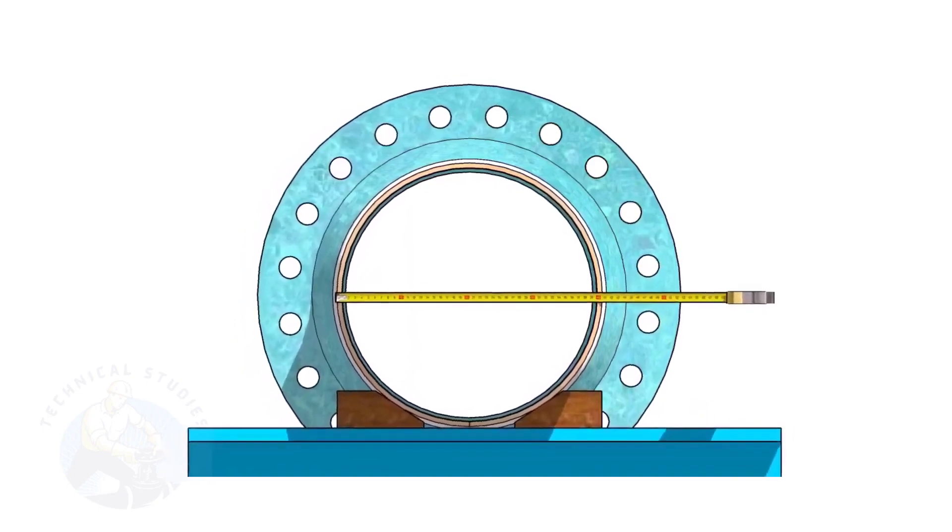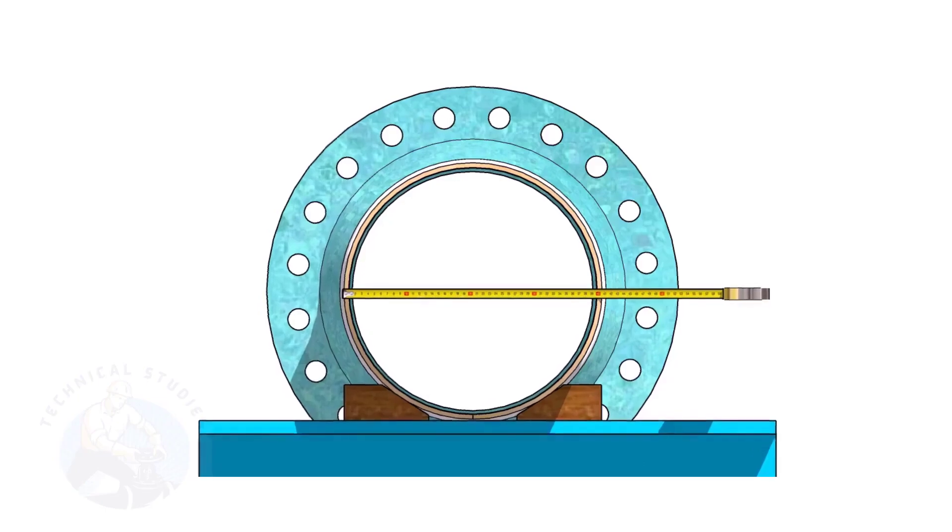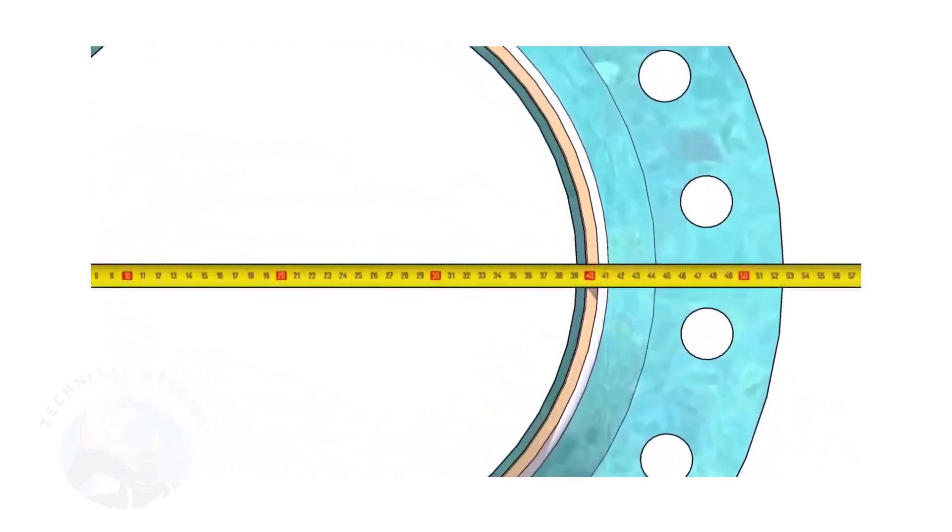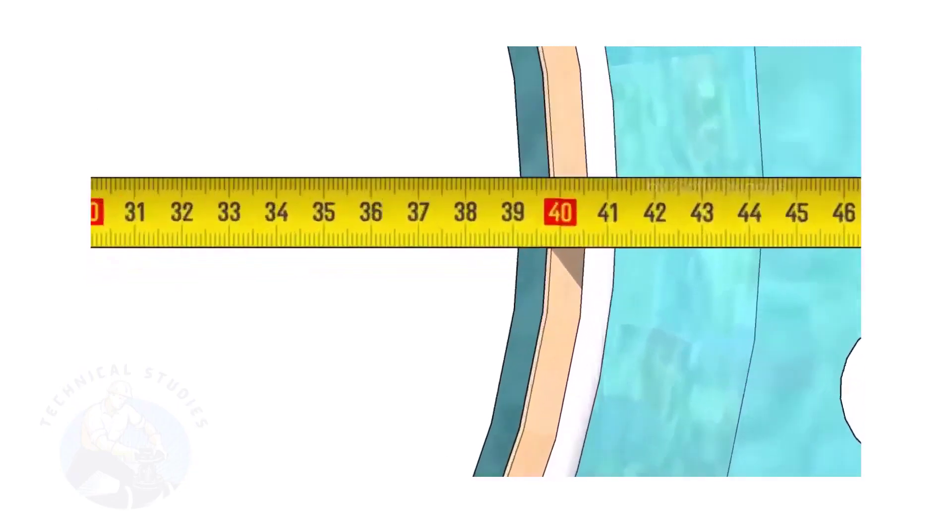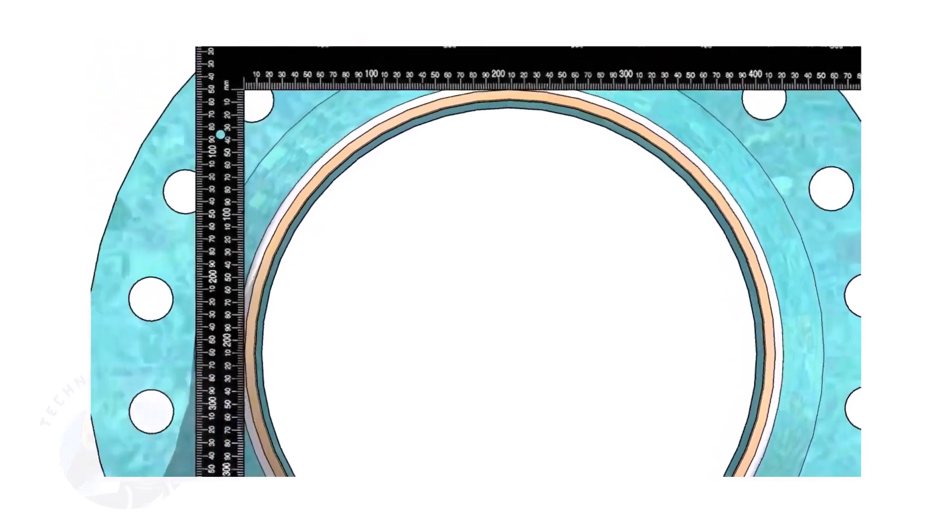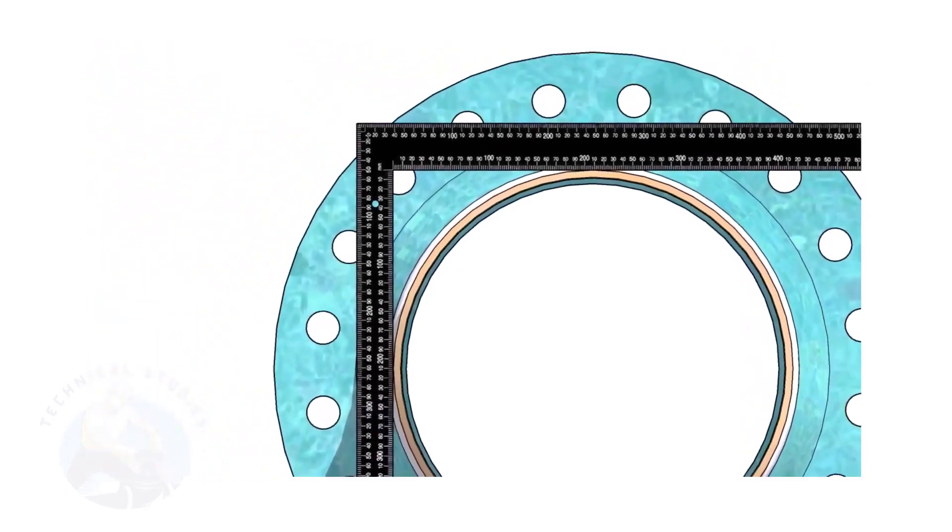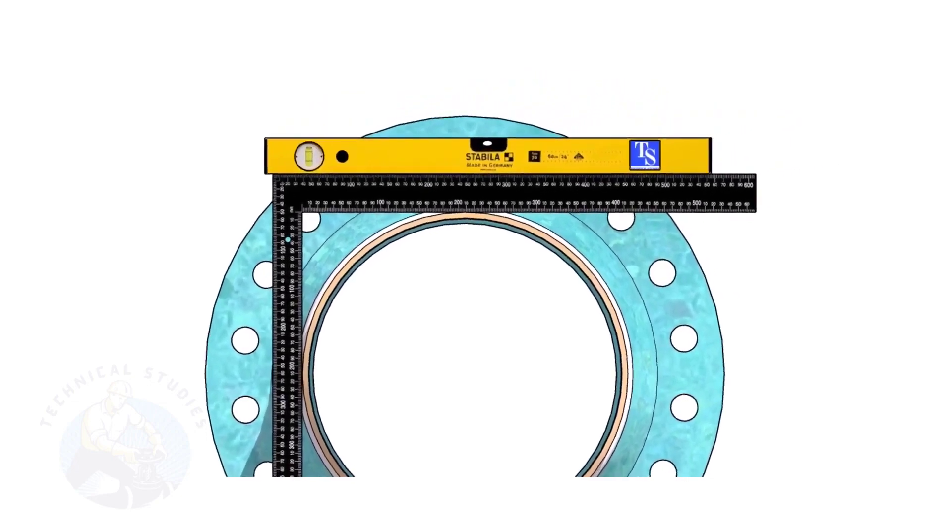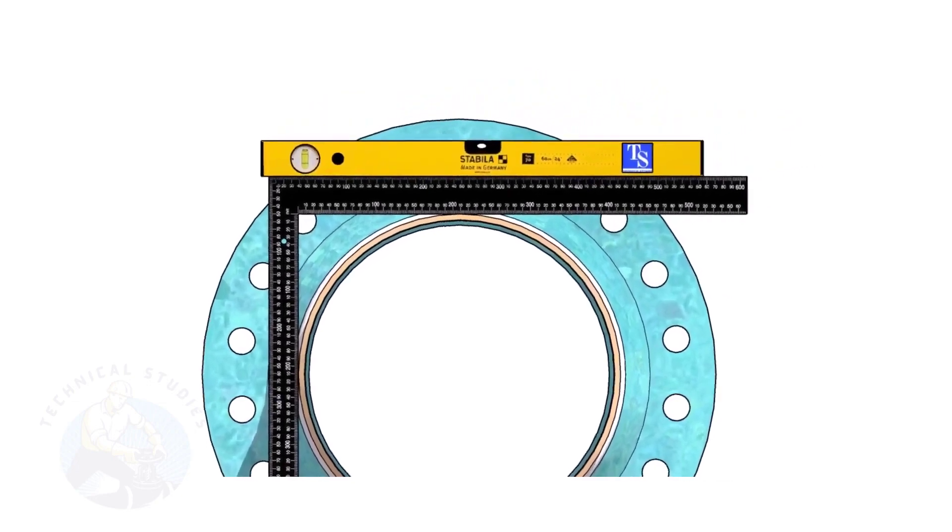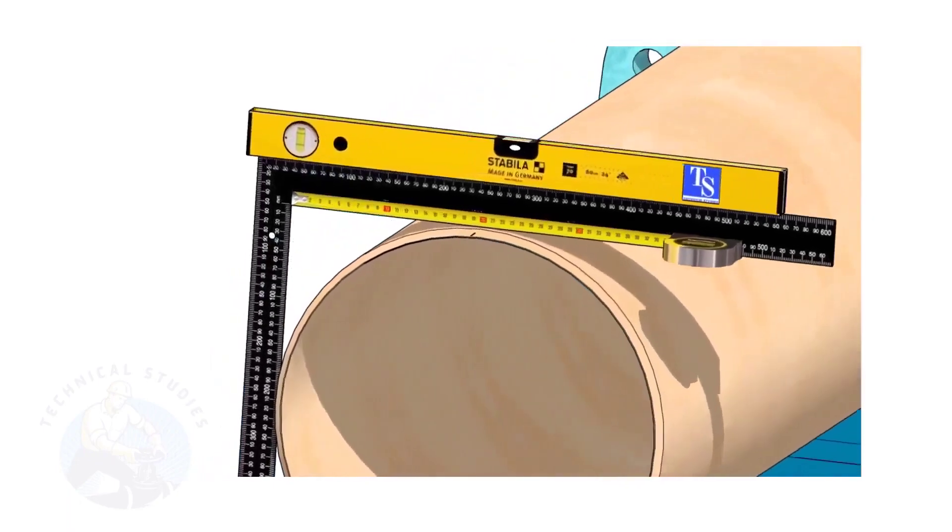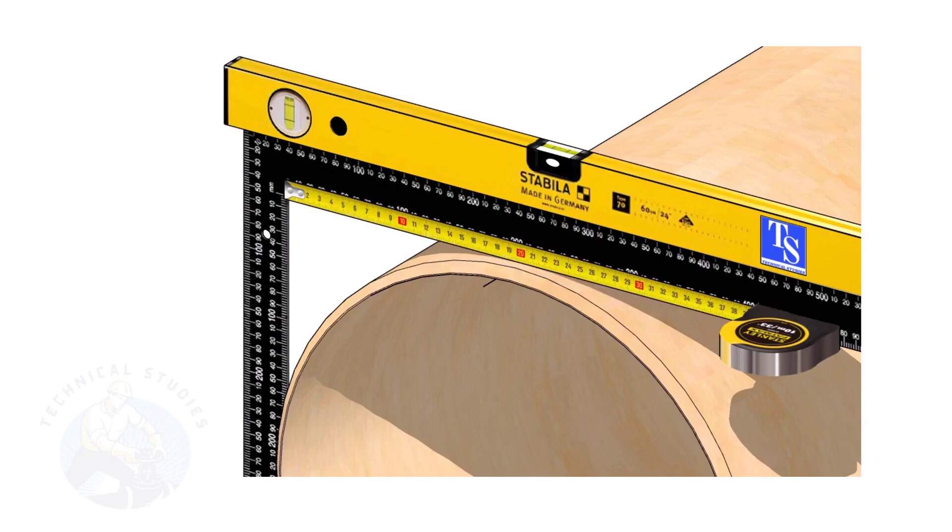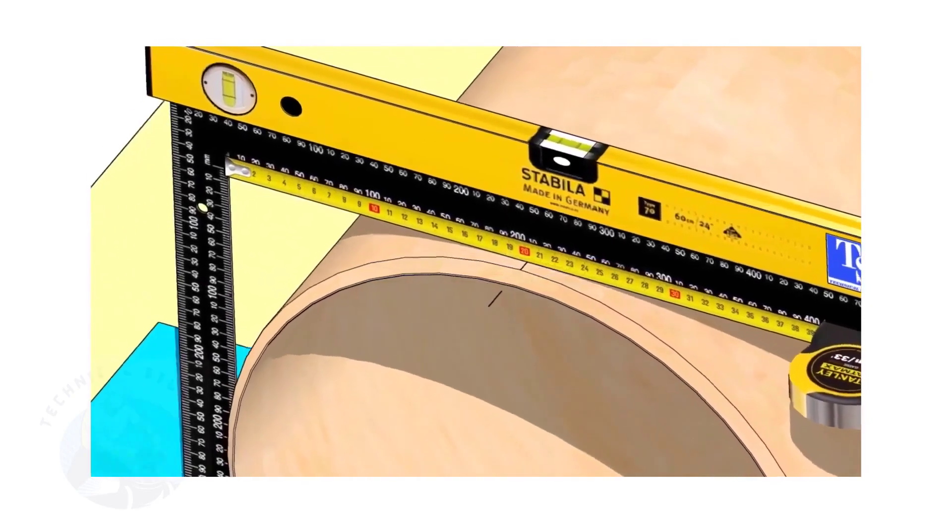Check the outer diameter of the pipe. Here, the diameter of the pipe is 406 millimeters. Hold a large right angle on the pipe as shown. Put a spirit level on the right angle and correct the top level. Mark half OD of the pipe on the top side. Here, the half OD is 203 millimeters.